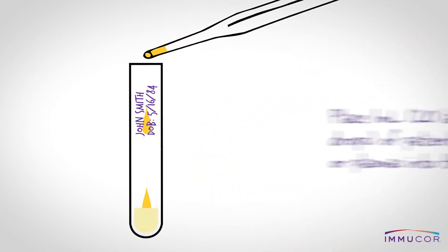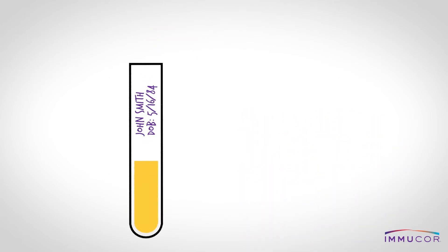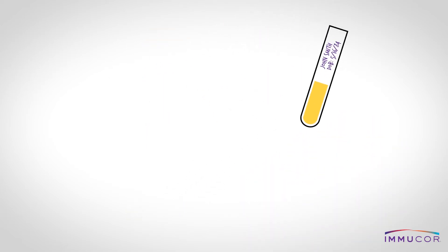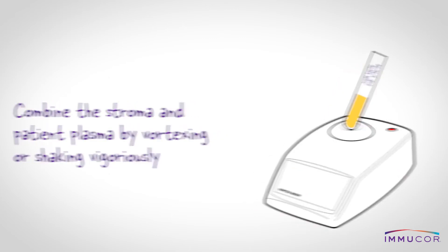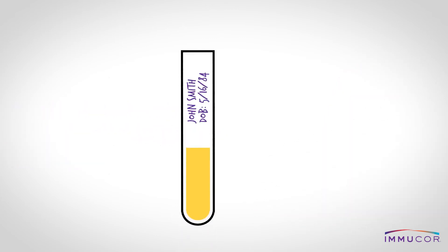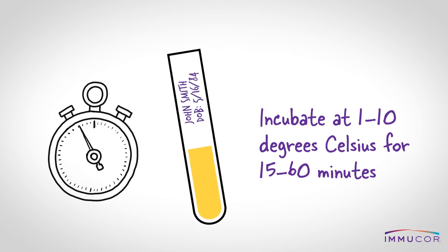Add one milliliter of patient or donor serum or plasma to the vial. Then combine the stroma and the patient plasma by mixing with a vortex or shaking vigorously. After the serum and the stroma are sufficiently mixed, incubate the vial at 1 to 10 degrees Celsius for 15 to 60 minutes. During incubation, occasionally mix.